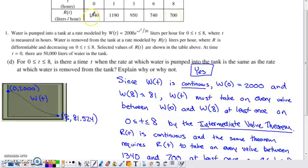And then this value is bigger than the smallest value that W(t) takes on. R(t) has to cross all Y values between 1340 and 700 as we go from 0, 1340 to 8, 700.